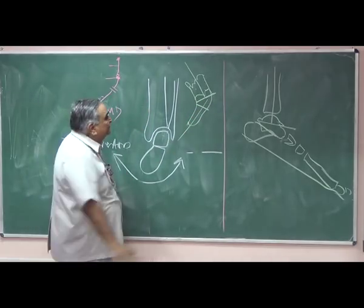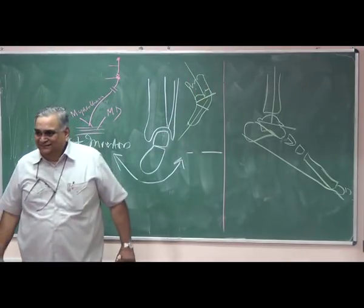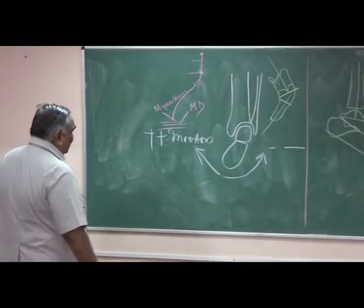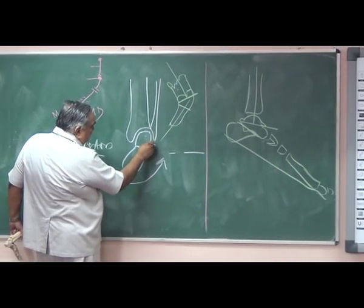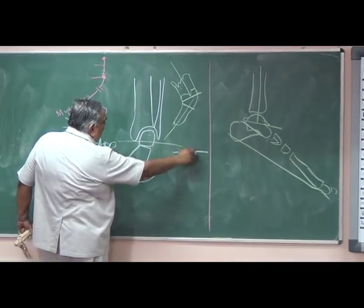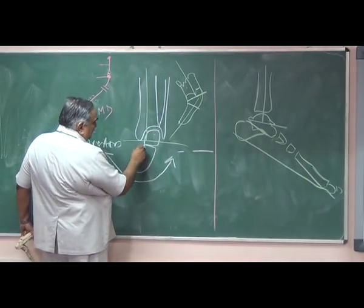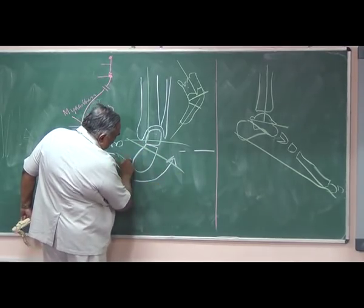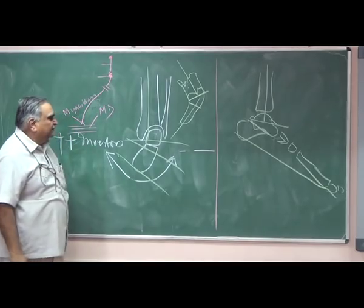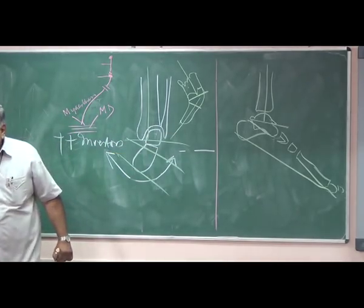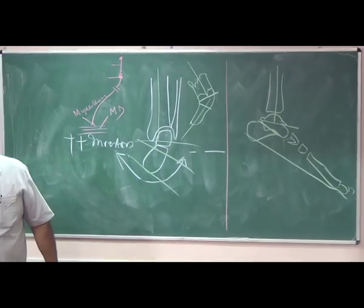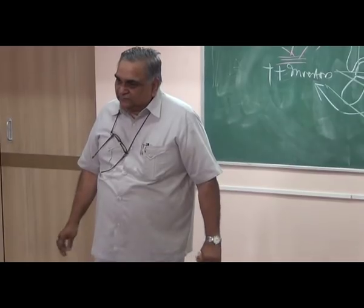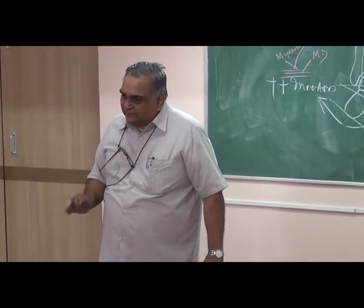For forefoot correction in triple arthrodesis, you cut the posterior surface of the navicular and cuboid perpendicular to the forefoot, and the anterior surface of the calcaneum and talus is cut perpendicular to the right foot. When you close the wedge, the forefoot is corrected. For inversion correction, cut the lower surface of the talus perpendicular to the leg and the upper surface of the calcaneum perpendicular to the inverted foot — when you close this wedge, the inversion is corrected. This is the principle of triple arthrodesis, done after the foot is mature, after 12 years.